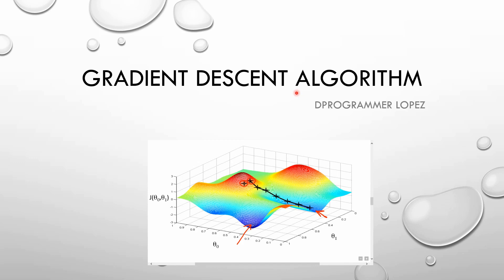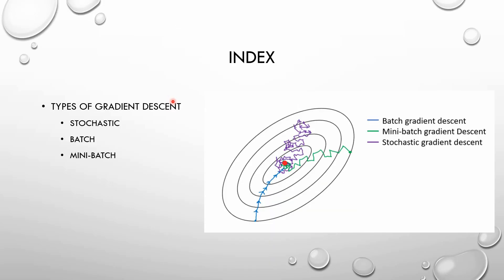Hello, welcome back. Today I am talking about the gradient descent algorithm. There are three different types of gradient descent algorithms: the stochastic, the batch, and the minibatch.